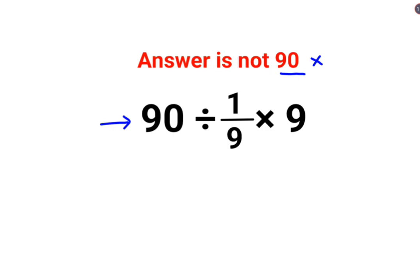Here we have 90 divided by 1/9 times 9. A lot of people thought that instead of doing this first, let's just cancel this because it looks easier. So then you end up with 90 divided by 1, and the answer comes out to be just 90.